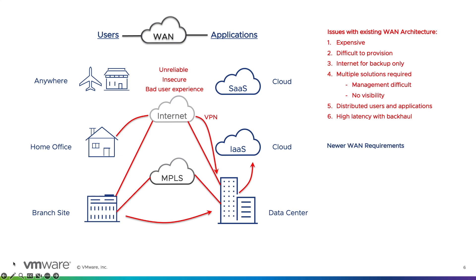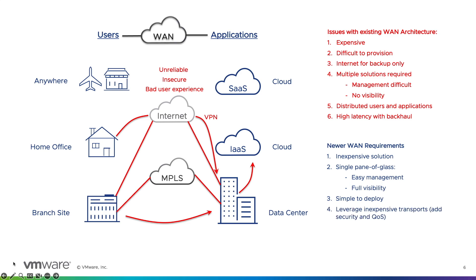To solve all these problems, you need a single solution that is inexpensive. It should provide a single pane of glass to manage all the different remote locations, with a single management plane for automated configuration of complex network and security policies. Easy management and full visibility across the wide area network are essential. The solution should also be easy to deploy — adding a new site should take only minutes, not months.